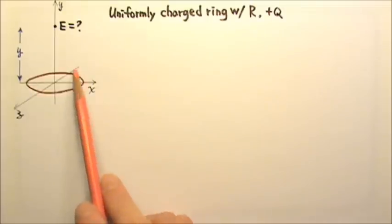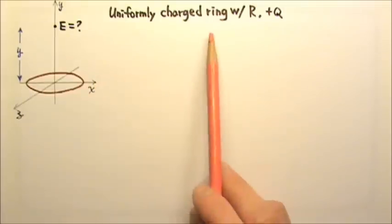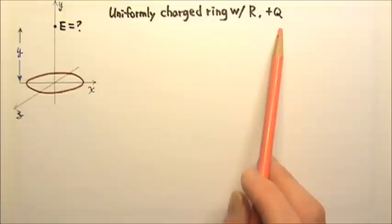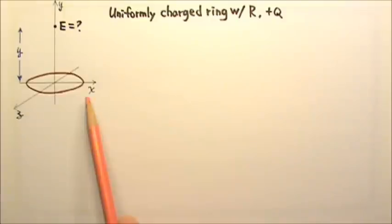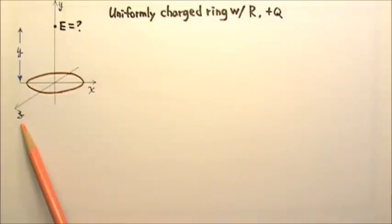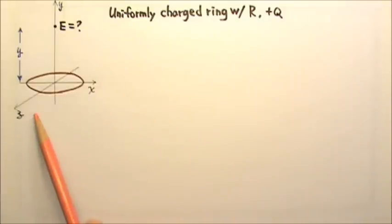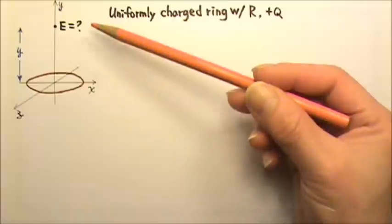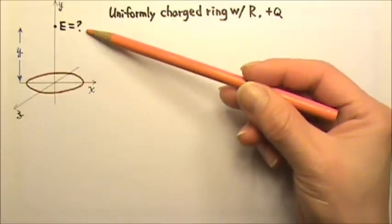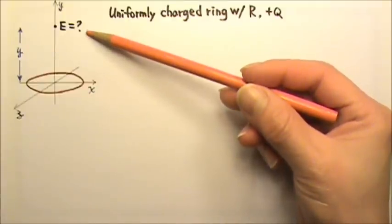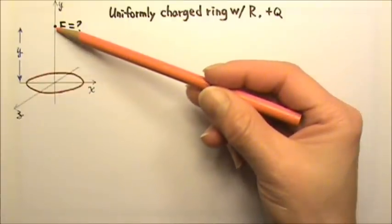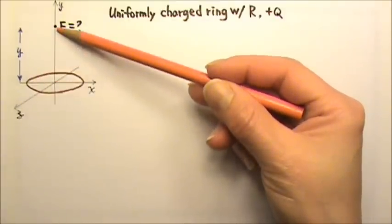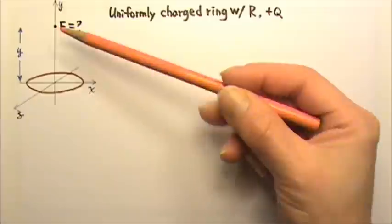A uniformly charged ring with radius R and net charge positive q is in the xz plane. The center of the ring is at the origin. What is the magnitude and direction of the electric field at a distance y above the center of the ring?